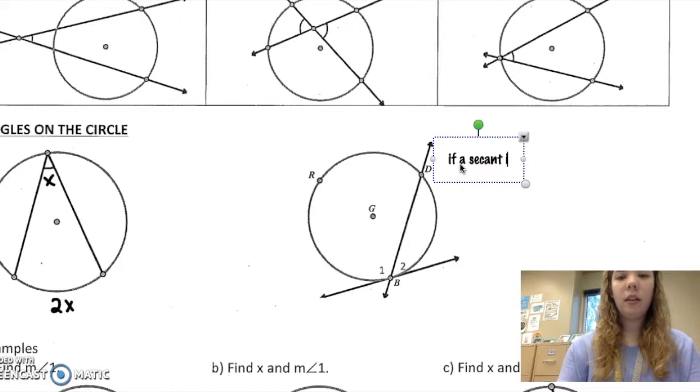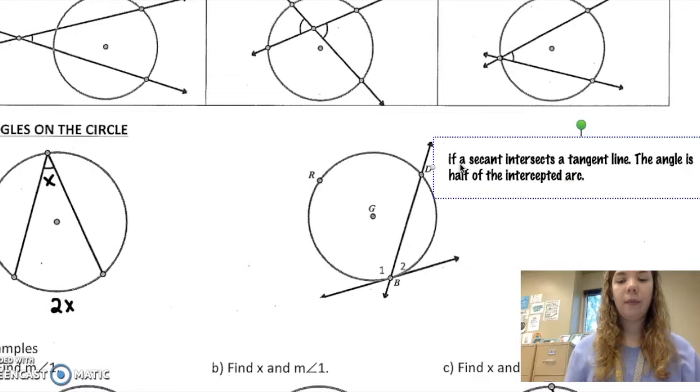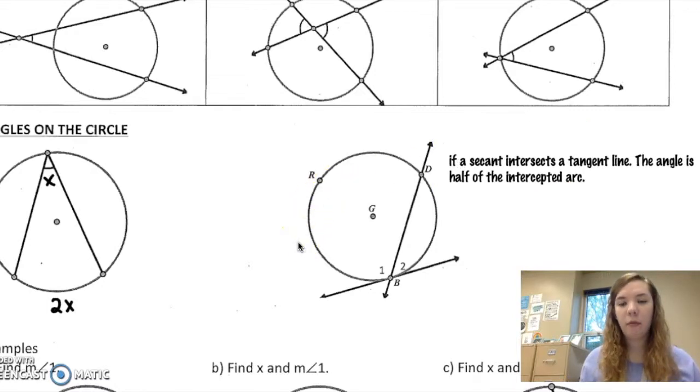If a secant intersects a tangent line, the angle is half of the intercepted arc. Okay, so same thing we were doing before.